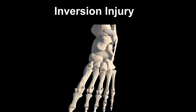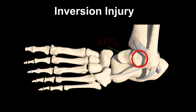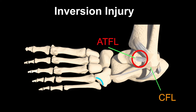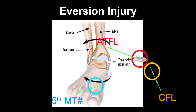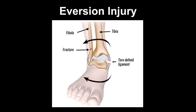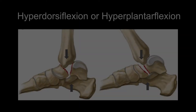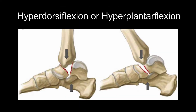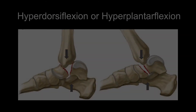An inversion injury may affect the anterior talofibular ligament, the calcaneofibular ligament, or result in a fifth metatarsal base fracture. This is the most common mechanism, but may be a combination of inversion and eversion. An eversion injury affects the deltoid ligament or results in a syndesmosis injury. Hyperdorsiflexion may result in a talus fracture or a dislocated peroneal tendon. Hyperplantarflexion may also result in a talus fracture.